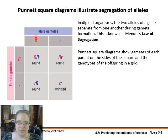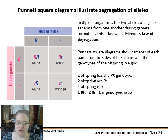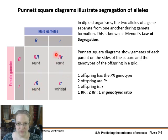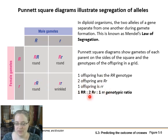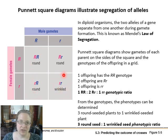In the male gametes column we fill in capital R, and in the other column we fill in little r. For the female, one row gets capital R and the other gets lowercase r. Filling in the grid shows us the genotypes: one homozygous dominant, one homozygous recessive, and two heterozygous offspring — written as capital R then lowercase r — giving us our one-to-two-to-one genotypic ratio. From the genotypes we can determine phenotypes: anyone with a capital R displays the dominant round trait, and only one offspring shows the recessive wrinkled trait.